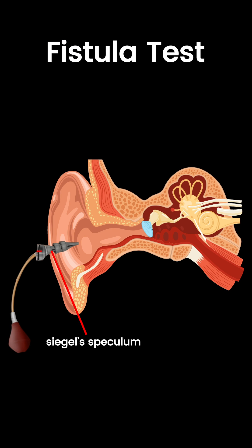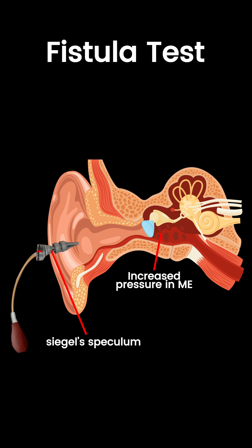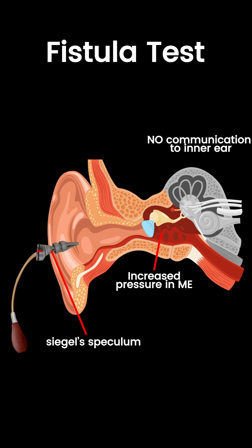Basically in the fistula test, you will use Seagull's pneumatic speculum and inflate its cuff to increase the pressure in the canal, which gets transmitted to the middle ear. Normally, when there is no communication, the pressure from the middle ear does not go to the inner ear, and hence there is no vertigo and no nystagmus.